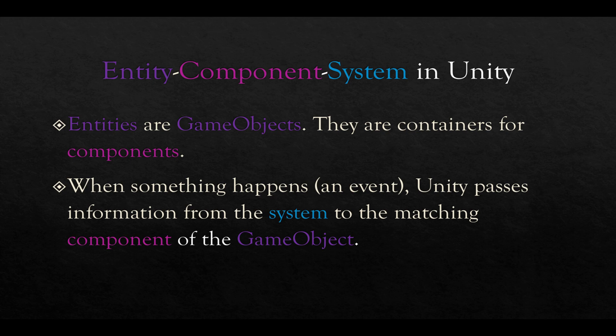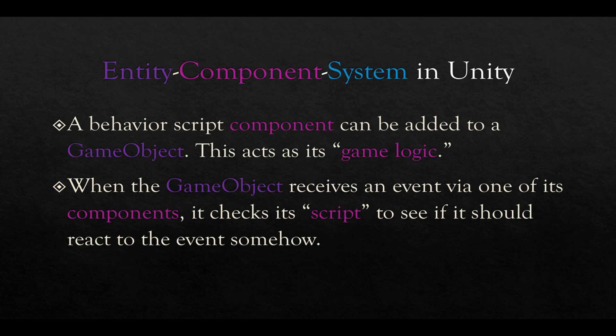So, putting these all together, we can add a behavioral script component to a game object that acts as its game logic. So we have a game object with a component, a behavioral script, as its game logic. So when the game object receives an event via one of its components, again, thinking of the examples of a physics system, input system, and rendering system, then it checks its script to know what behavior it should do.